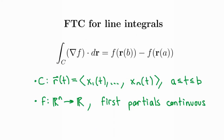Let's take a look at the statement of the fundamental theorem of calculus for line integrals. It says that the line integral of the third kind of the gradient of a scalar field over a piecewise smooth curve C is equal to the difference of the values of the scalar field at the endpoints of the curve.